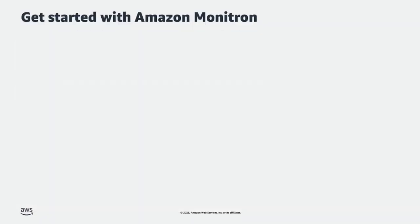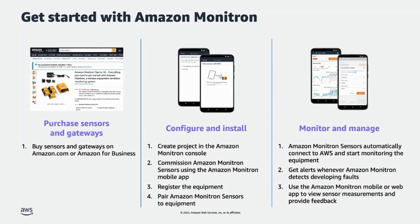How do you get started with Monitron? You can buy the sensors and gateways on Amazon.com or Amazon Business if you want to buy in bulk or use a purchase order. Next, you need to configure and install Monitron. You would start out by creating a project on the Monitron console. Once the console is set up, you will need to set up the Monitron hardware — the sensor and gateway. Using the Monitron mobile app, which is available both in Android and iOS, you can commission the gateway, register the equipment you would like to monitor, and start pairing the Monitron sensors to one or more positions on the equipment. The Getting Started Guide and documentation online provides step-by-step instructions on the process.